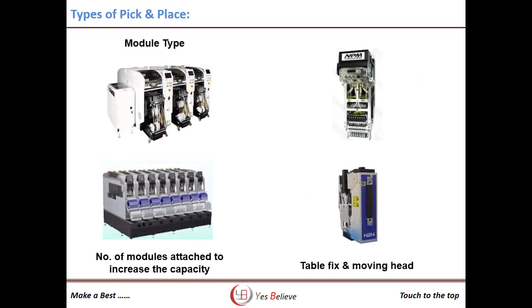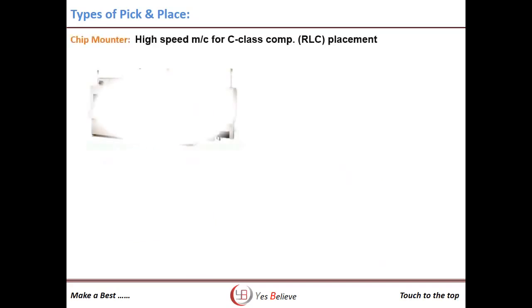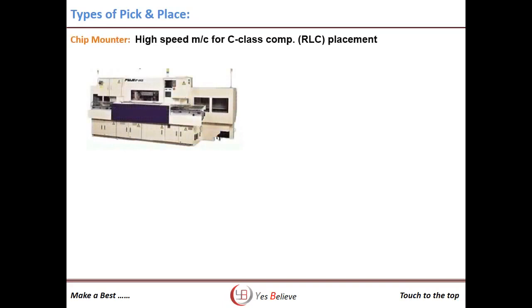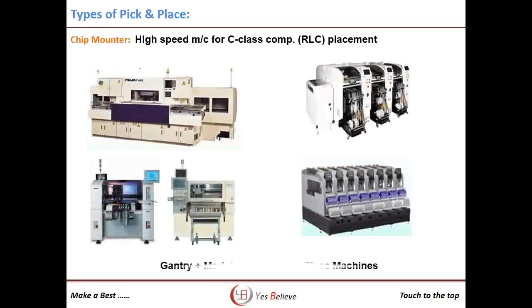The third type is the modular mount. As explained, the rotary type pick and place machine has a limitation of cycle time. In the modular type pick and place machine, you can increase production capacity by adding the number of modules. Depending upon the size of components, the mounting speed is different. In SMT, the pick and place machine is distinguished by chip mount — the high-speed chip mount is utilized for C-class component placement. Basically, gantry and modular machines are used for this purpose.